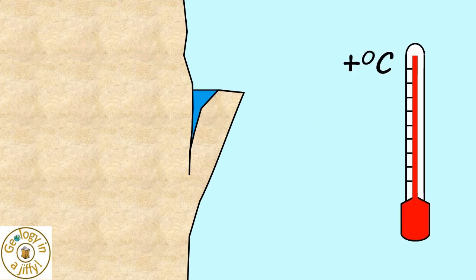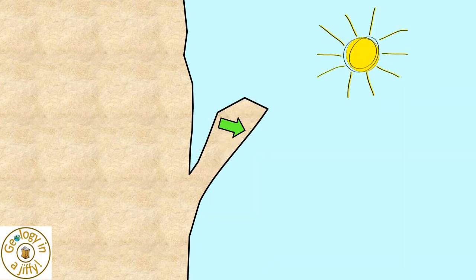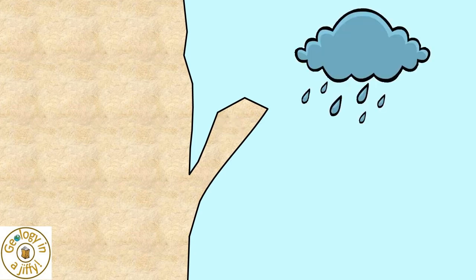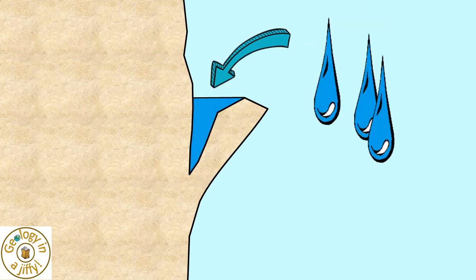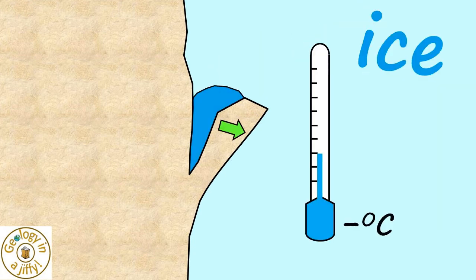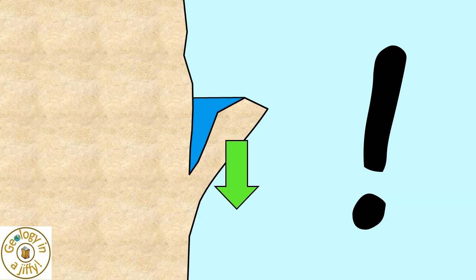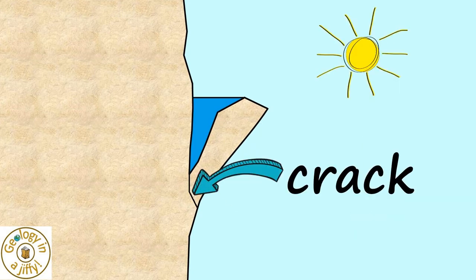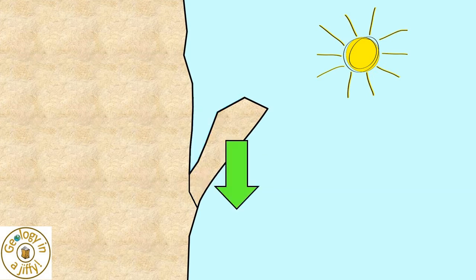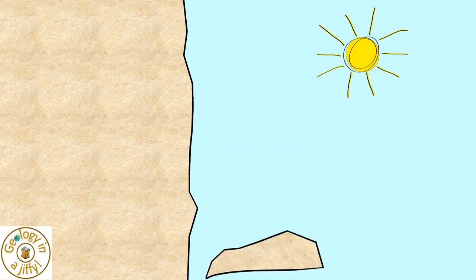This ice melts, leaving the rock fragment hanging even more from the cliff face. More rain, more ice, more melting — pushed the rock fragment so far out that the weight of the water, combined with the force of gravity, cracks the base of the rock fragment, until gravity overcomes and the fragment topples from the cliff face.